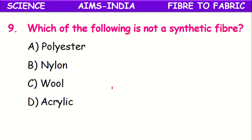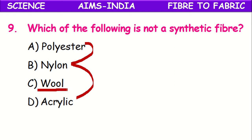Which of the following is not a synthetic fiber? The options are polyester, nylon, wool, and acrylic. Polyester, nylon, and acrylic are synthetic or man-made fibers because they are prepared in the laboratory from chemicals, not from natural resources. But wool is obtained from the hair of certain animals like sheep, camel, and yak — so it is obtained from natural sources and is a natural fiber, not a synthetic fiber.